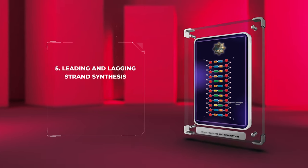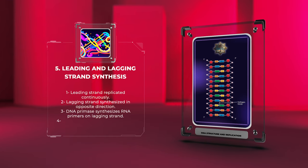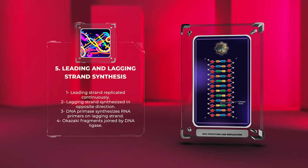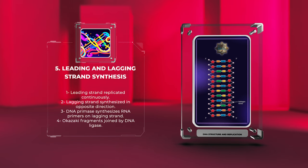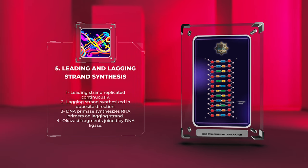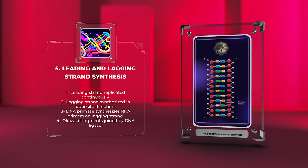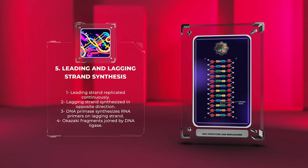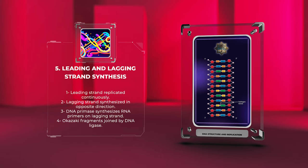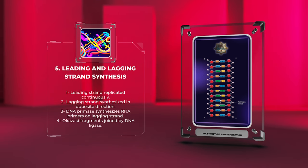The leading strand is replicated continuously in the same direction as the replication fork movement. However, the lagging strand is synthesized in the opposite direction, requiring a unique mechanism. DNA replication requires RNA primers to initiate DNA synthesis. On the lagging strand, DNA primase synthesizes short RNA primers, providing a starting point for DNA polymerase III to begin synthesizing Okazaki fragments. These fragments are later joined by DNA ligase.